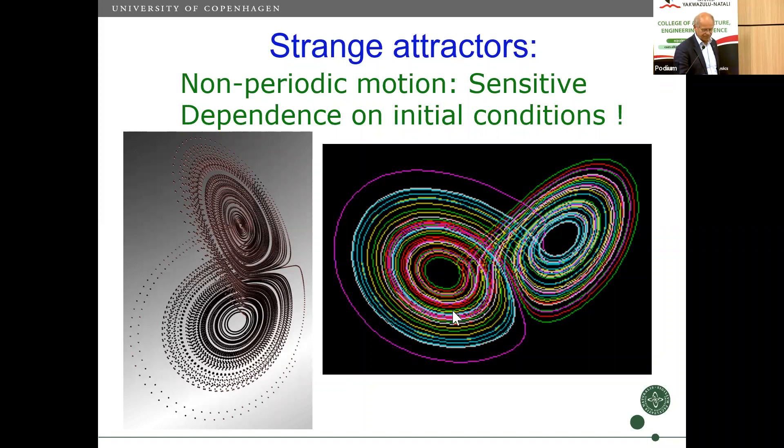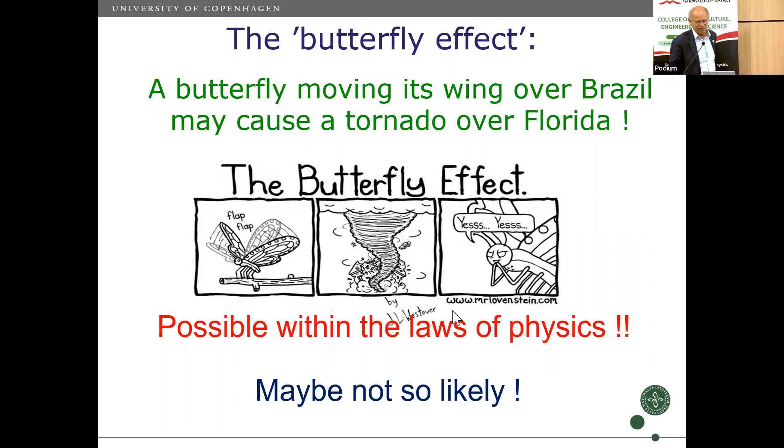You might think that this chaos sounds a little bit loosely defined, maybe, but actually very, very precisely well defined mathematically. You see these chaotic structures often, what we call strange attractors. Why strange attractors? They attract solutions in what we call phase space and they look a little strange. Sometimes you hear in particular in movies that there's something called a butterfly effect. People say a butterfly moving its wing over Brazil may cause a tornado over Florida.